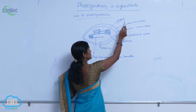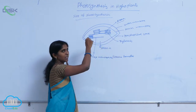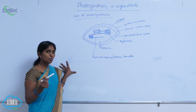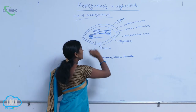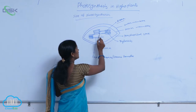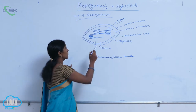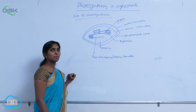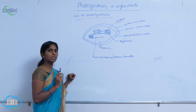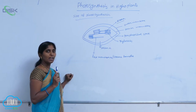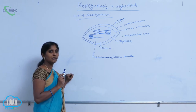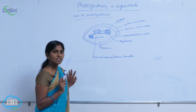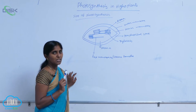The enzymes required for the light phase are present in the grana, where light reactions are mediated. In contrast, the enzymes for the dark reaction are present in the stroma. The stacks of thylakoids are connected by membranes called fret membranes or stroma lamella. Both the light and dark phases are conducted at the chloroplast — the light phase at the grana and the dark phase at the stroma.